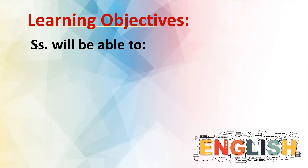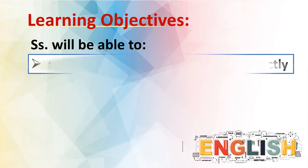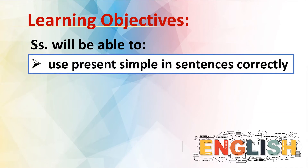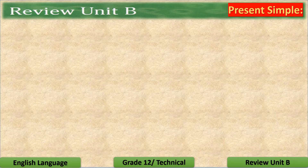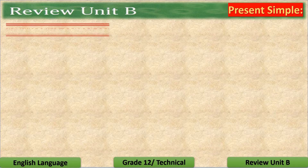In our learning objectives for today, students will be able to use present simple in sentences correctly and use comparative adjectives in sentences also correctly. Dear students, let's begin with the present simple, the first objective in our lesson for today.